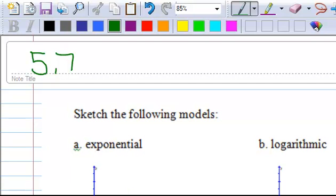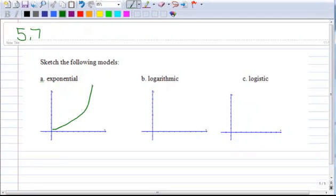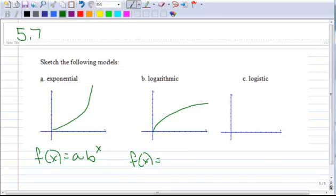So exponential, you're very familiar with that. It looks something like that, and the form of that is f(x) equals a times b to the x. Logarithmic kind of looks like an inverted exponential, so it looks like that, and it has the form f(x) equals a plus b times the natural log of x.